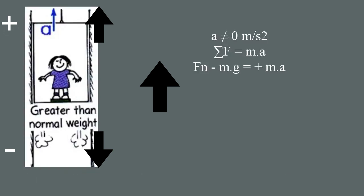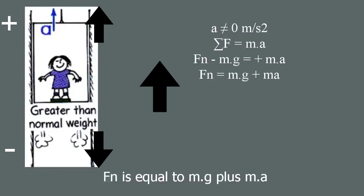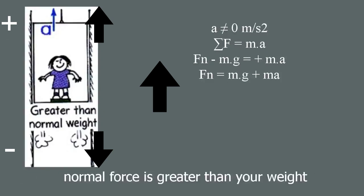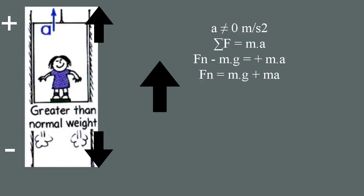Therefore, fn equals mg plus ma. You can see that when the elevator is speeding up, the normal force is greater than your weight.